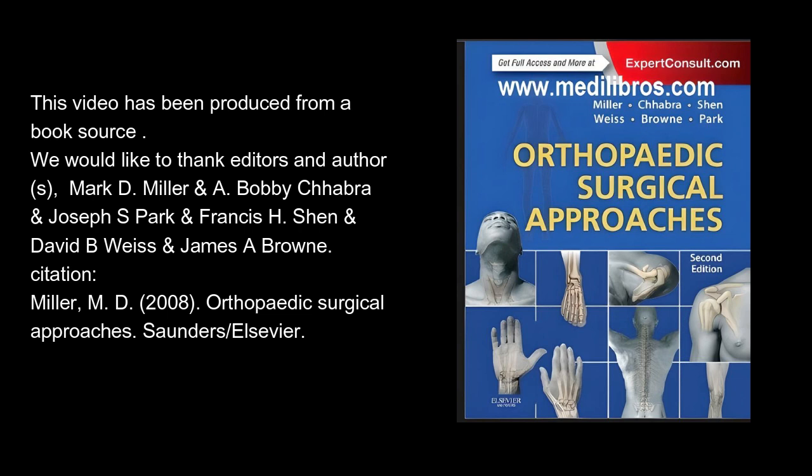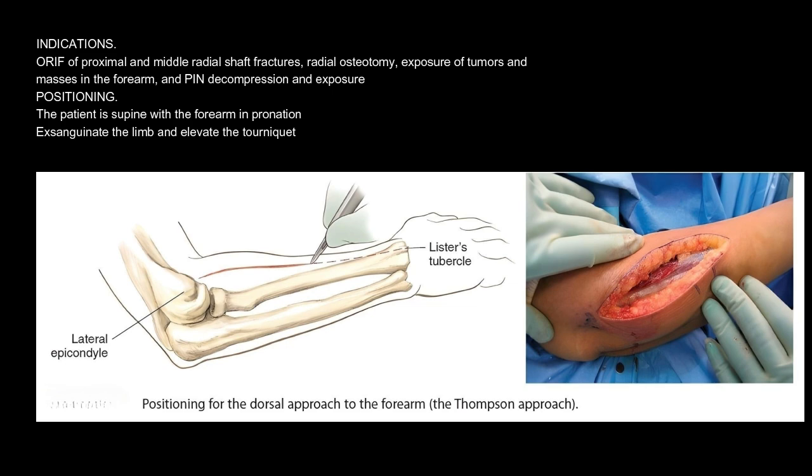Indications: ORIF of proximal and middle radial shaft fractures, radial osteotomy, exposure of tumors and masses in the forearm, and PIN decompression and exposure. Positioning: The patient is supine with the forearm in pronation. Exsanguinate the limb and elevate the tourniquet.